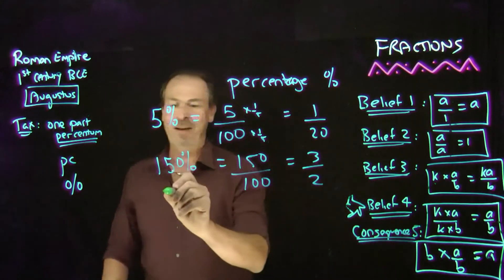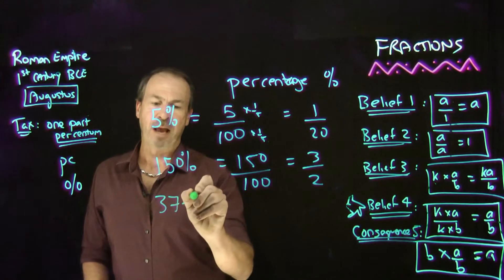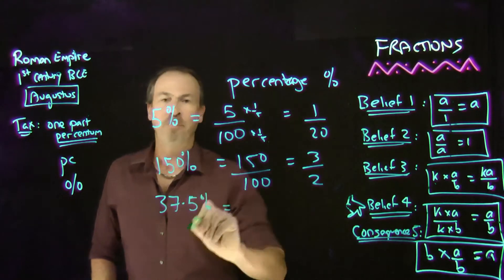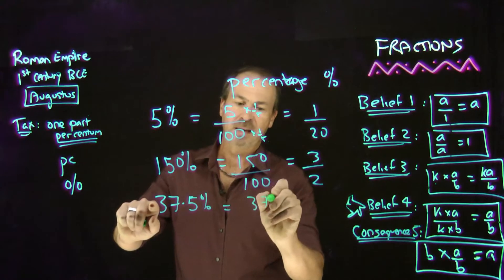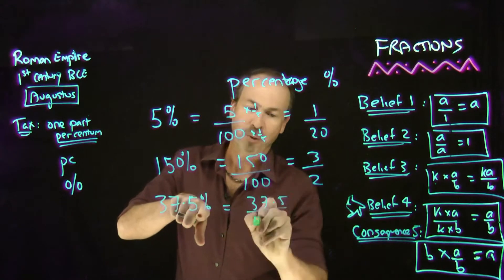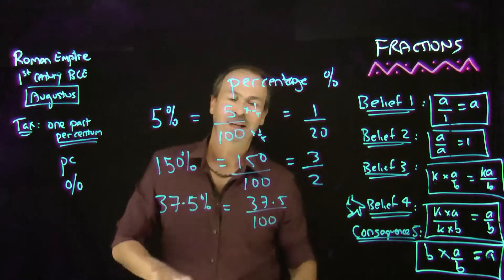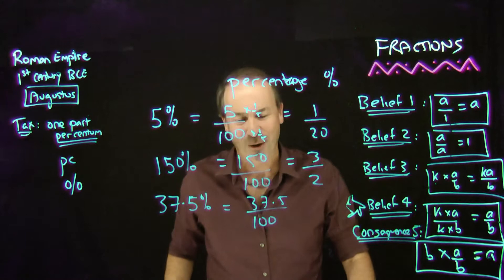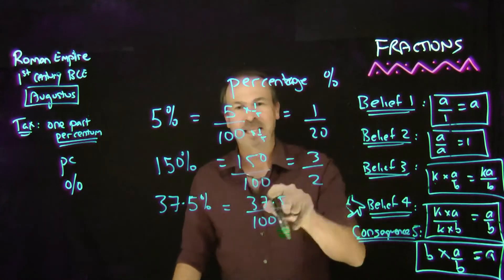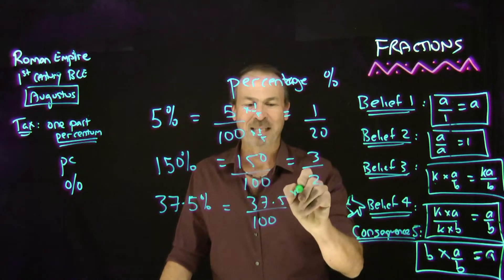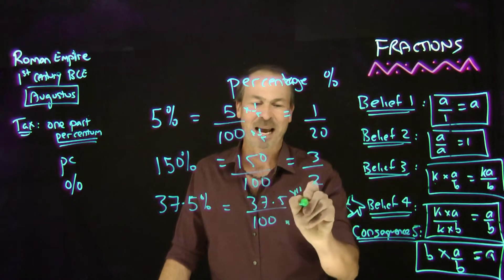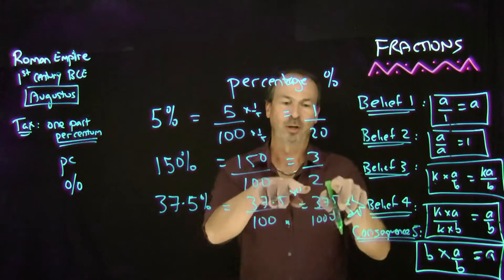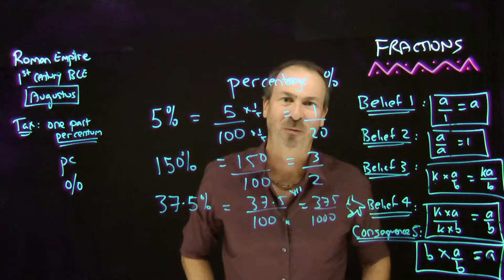Even all good things like 37.5% would be the fraction 37.5 per centum, per 100. It's the fraction 37.5 over 100. If you don't like decimals in your top lines, multiply the top by 10, bottom by 10 — this would be 375 out of 1,000.